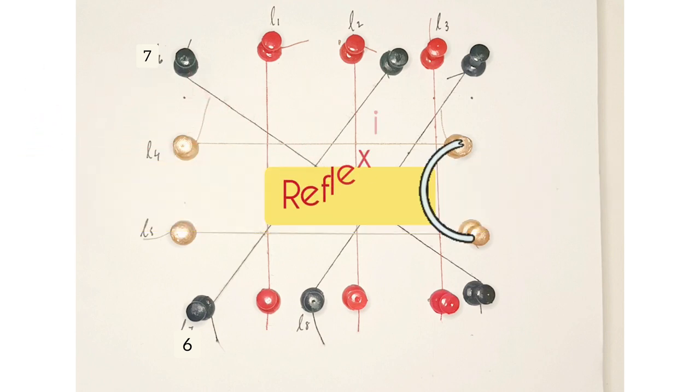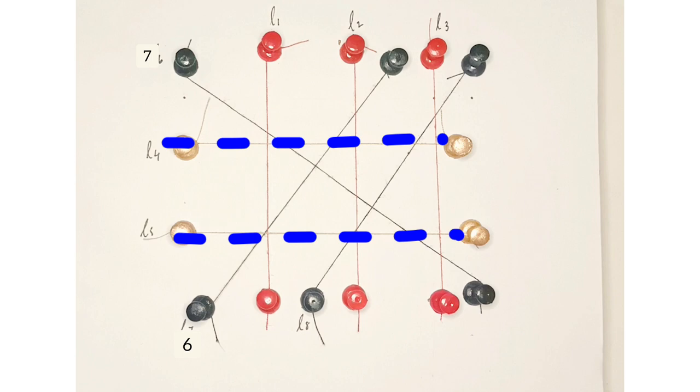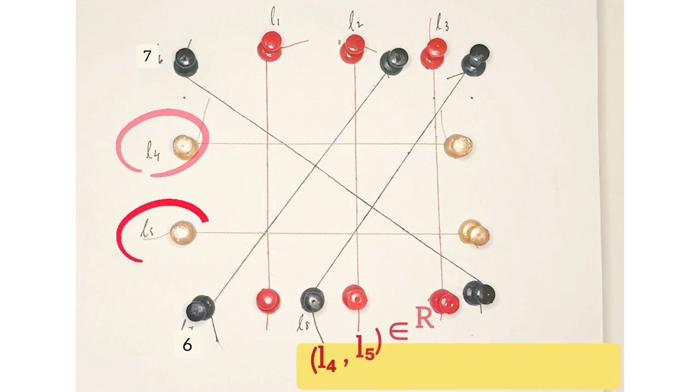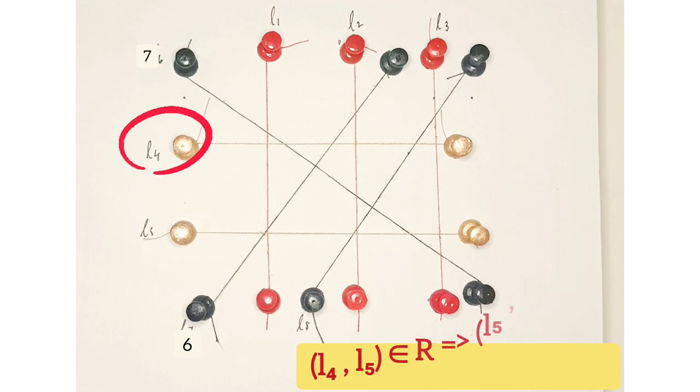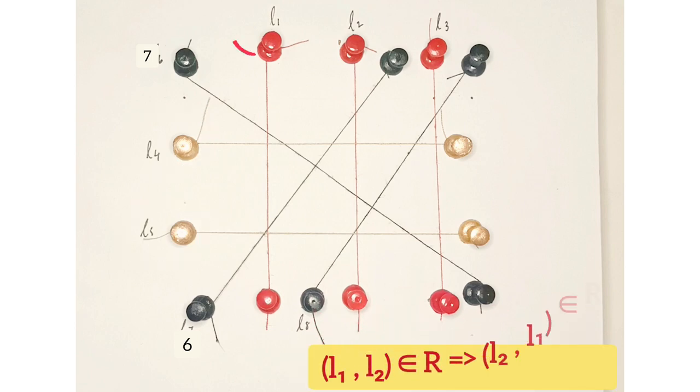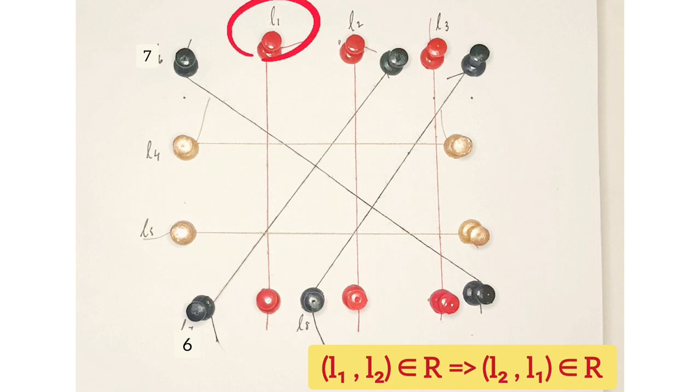Here we see that L4 is parallel to L5, thus L5 is parallel to L4. So (L4, L5) belongs to R, which implies (L5, L4) belongs to R. Similarly, (L1, L2) belongs to R implies (L2, L1) belongs to R.